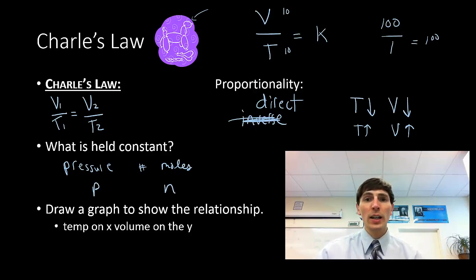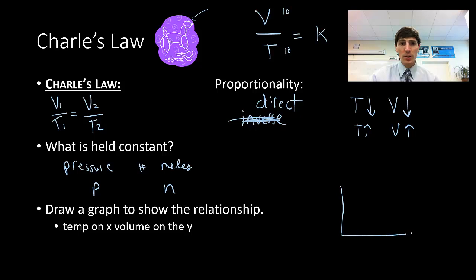Looking at this graphically, temperature's on the x, and we have volume on the y. As the temperature went up, the volume went up. As the temperature went down, the volume went down. Low temps had low volumes, high temps had high volumes. We see this direct relationship.